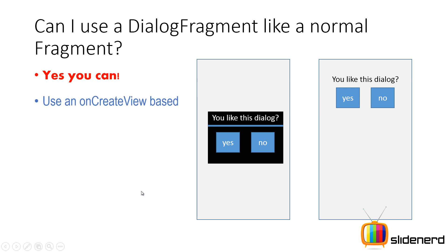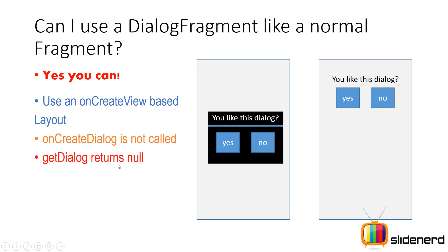There are three things you need to remember. First, use an onCreateView based layout — don't use the dialog class or the AlertDialog.Builder classes for doing this. Second, the onCreateDialog method is not called when you are doing this inside your activity. Third, the getDialog method returns null if you are adding the dialog fragment directly inside your activity. That is why when you see any sample on developer.android.com or any website, they always get the dialog object by saying getDialog and then test it for null.